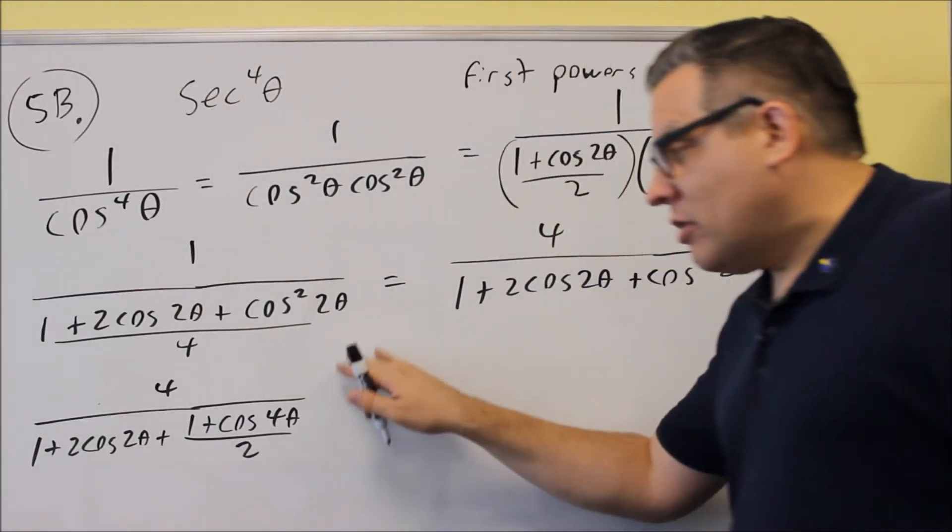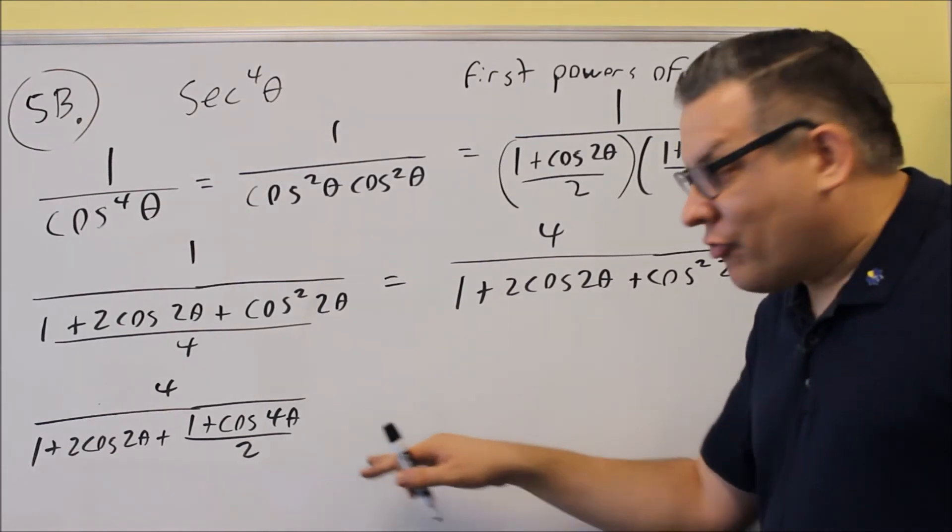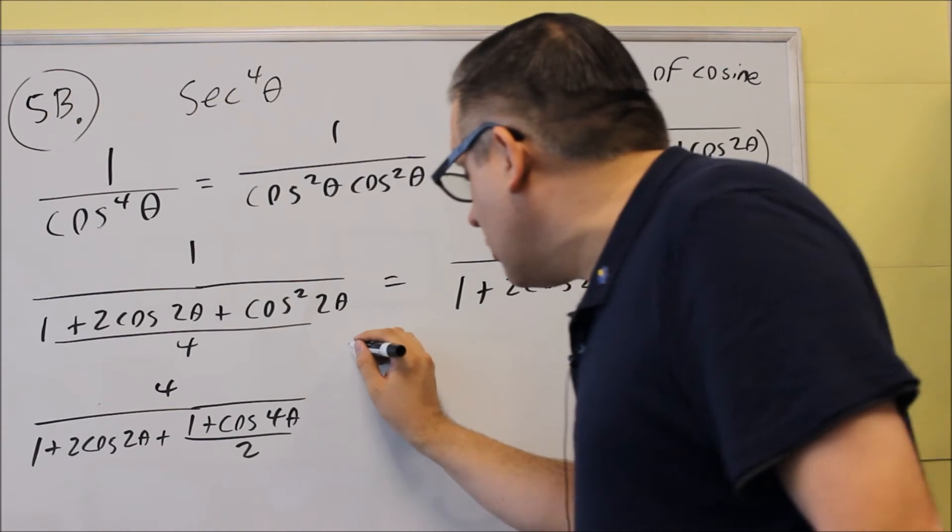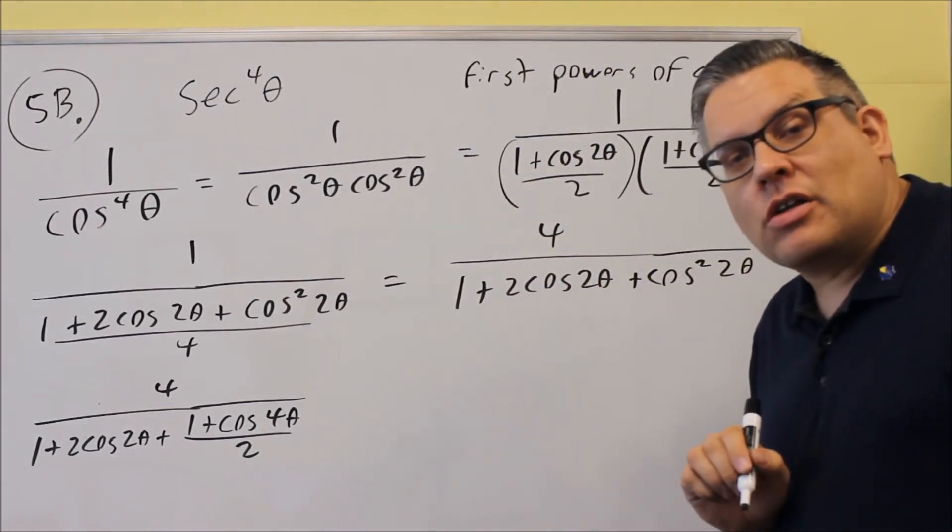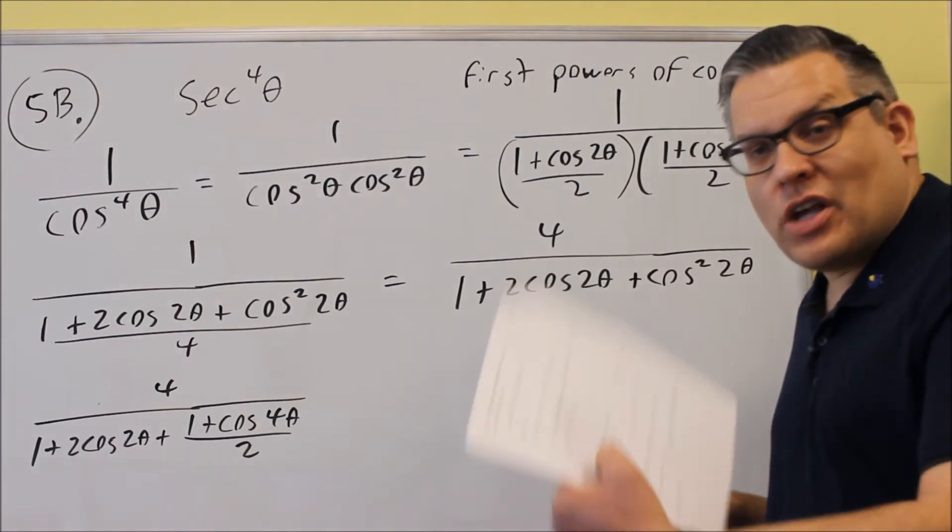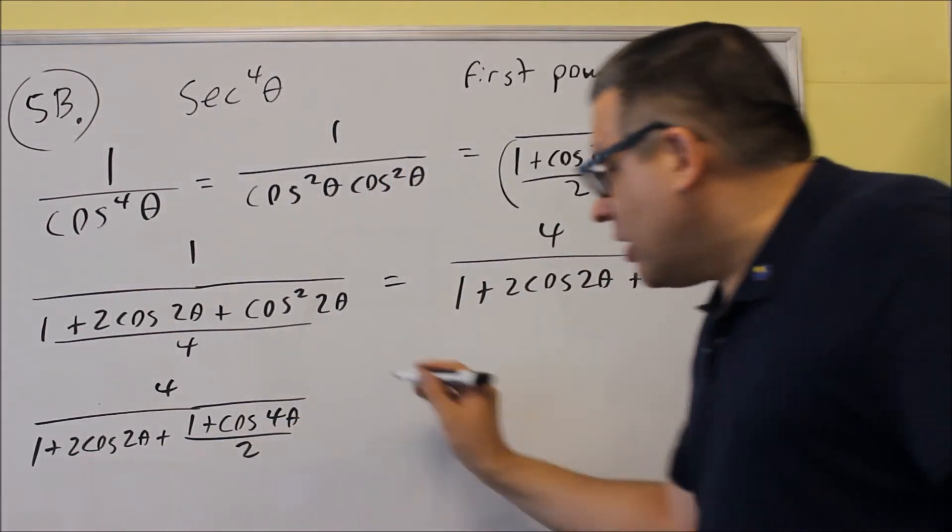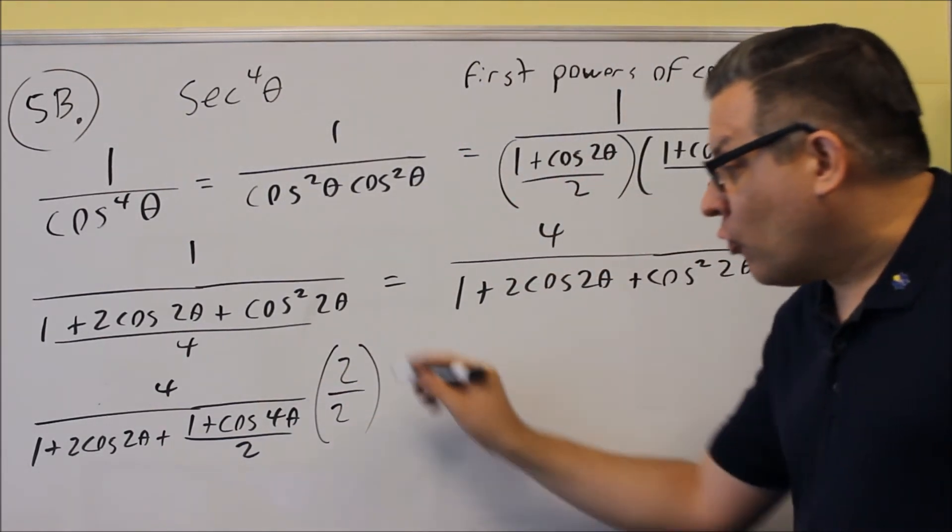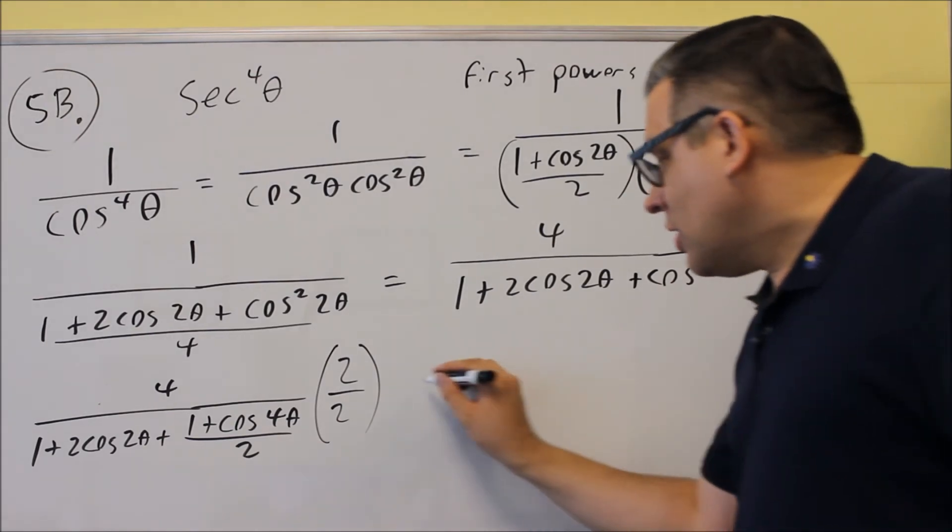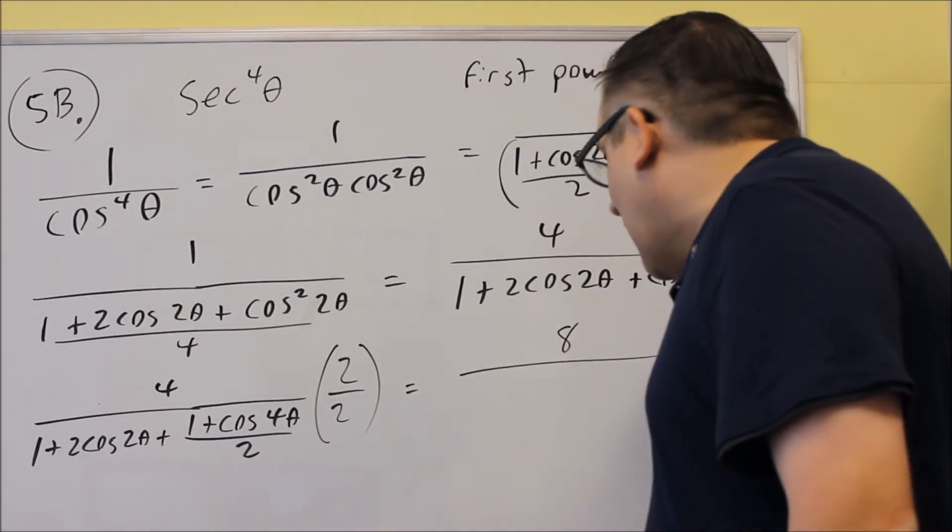Now, I want to get rid of the fraction within a fraction. So I'm going to – you can either do it one of two ways. The way I showed it in the notes for this, the answer key, is I got common denominators there. But another way you could do it is just multiply the whole thing by a power of 1, multiply by 2 over 2. Now, if I multiply across the top, I'll get an 8.